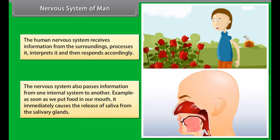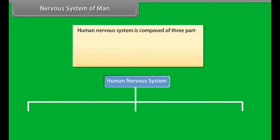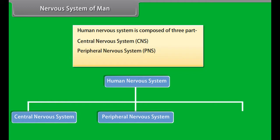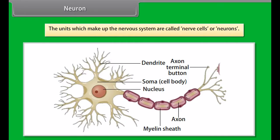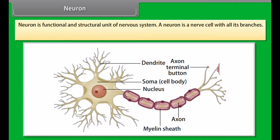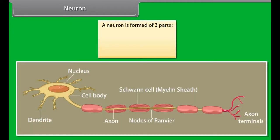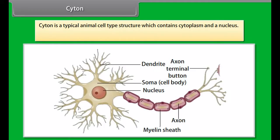The function of the nervous system is to coordinate the activities of our body. It is the control system of all our actions, thinking, and behaviour. The human nervous system receives information from the surroundings, processes it, interprets it, and then responds accordingly. It also passes information from one internal system to another — for example, as soon as we put food in our mouth, it immediately causes the release of saliva from the salivary gland. The human nervous system is composed of three parts: central nervous system (CNS), peripheral nervous system (PNS), and autonomic nervous system (ANS).